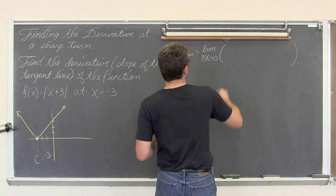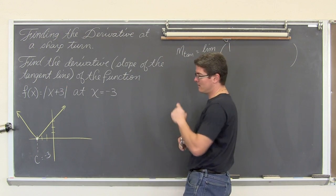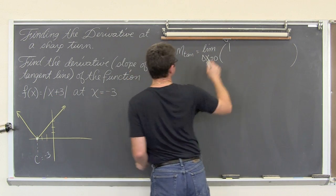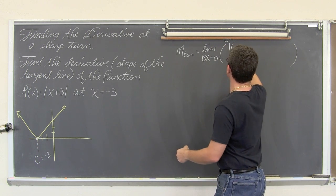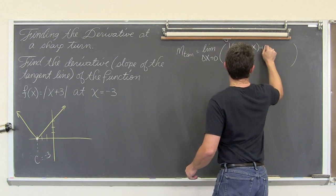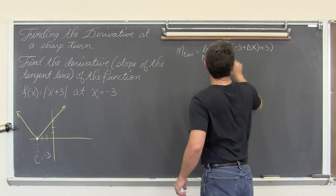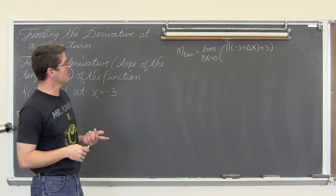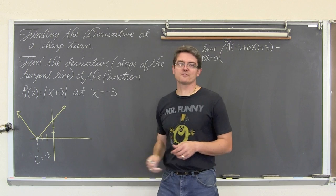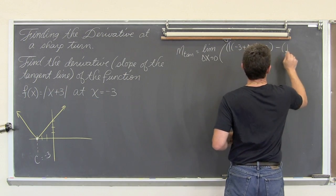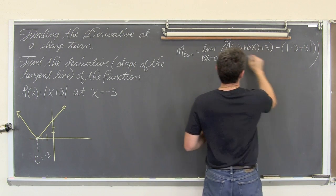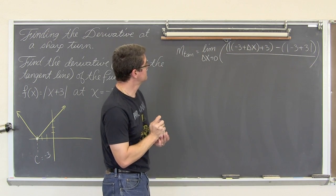So the function is absolute value of f(c + Δx). So where the x is, we are going to plug in c, which is negative 3, plus Δx plus 3. So that is my f(c + Δx) term, minus f(c). So c is negative 3, and we are going to plug that in. So minus absolute value of negative 3 plus 3, all over Δx.